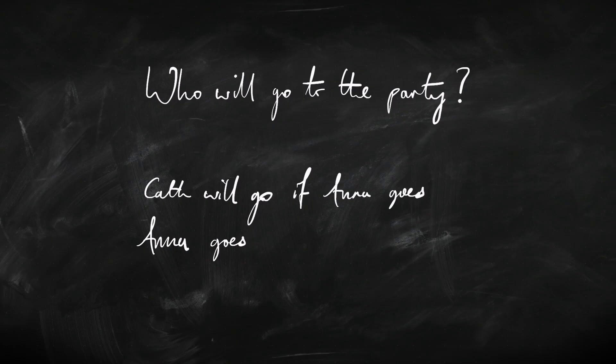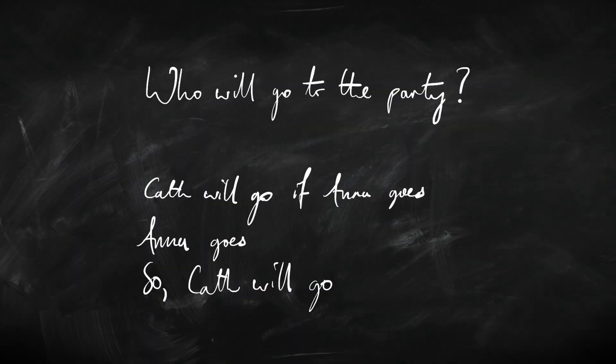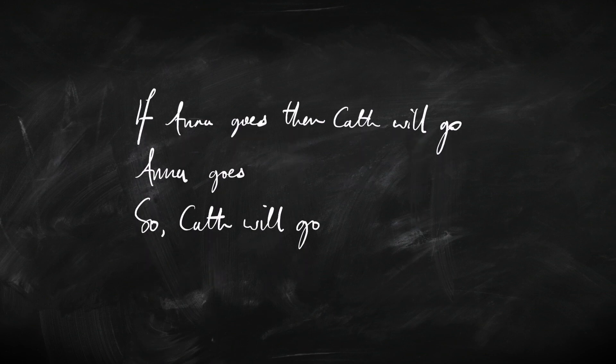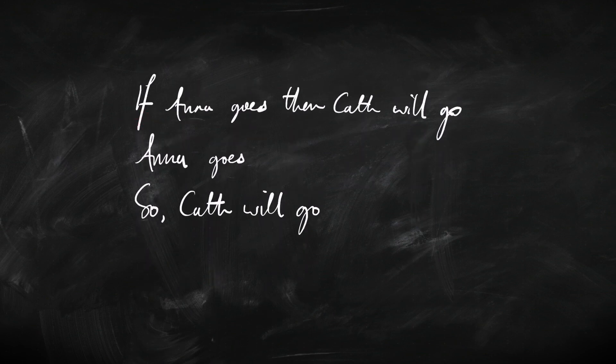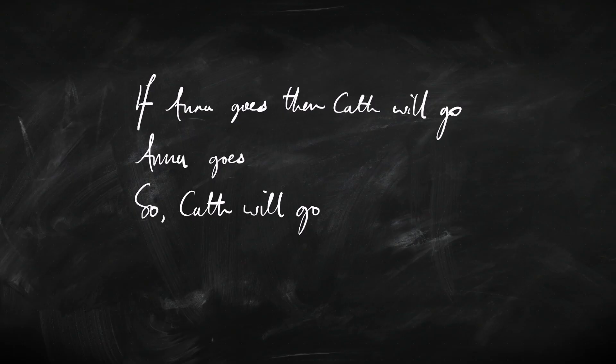Another example: who's going to go to the party? Well, Kath will go if Anna goes. The important word here is 'if,' and if we've also got the information that Anna goes, then we can conclude Kath will go. A different way of saying 'Kath will go if Anna goes' is 'if Anna goes then Kath will go.' So if we know 'if Anna goes then Kath will go,' and also 'Anna goes,' we can conclude Kath will go.